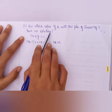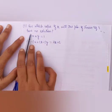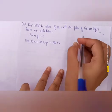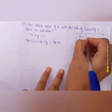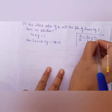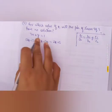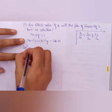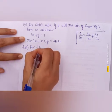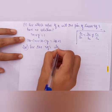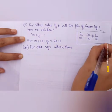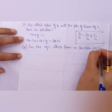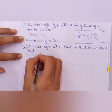The second part asks: for which value of k will the pair of linear equations have no solution? For no solution, we apply the condition a1/a2 = b1/b2 but not equal to c1/c2, because this is the condition for linear equations which have no solution. We will solve using this condition.